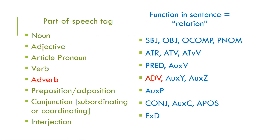If you see the parts of speech and the relations possible in Greek, these are all things we're going to explain as we get to them. Some are pretty obvious: a noun can be the subject of a verb or the object of a verb, the complementary object, or the predicate nominative. An adjective can be an attribute. The predicate is the main verb of the sentence. You can also have auxiliary verbs, though they're pretty rare in Greek. The one potentially confusing overlap is that both parts of speech and relations use the term 'adverb.' Everything else is pretty straightforward.